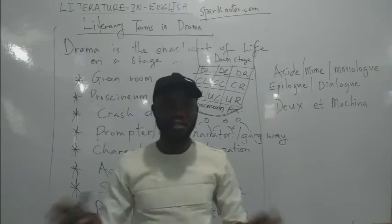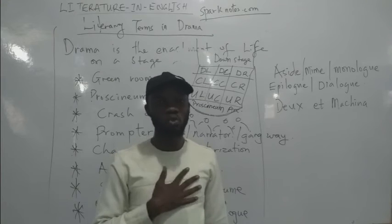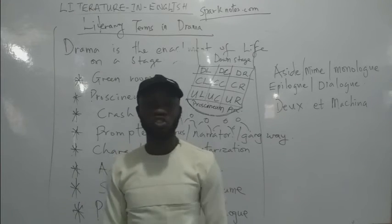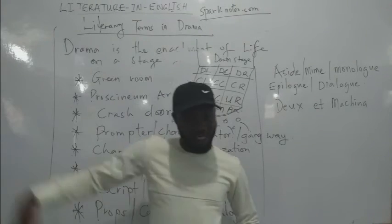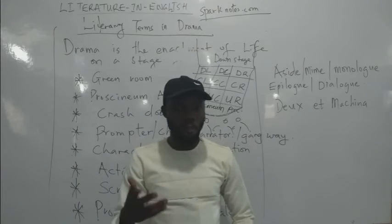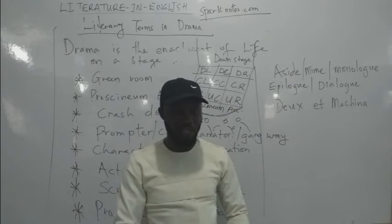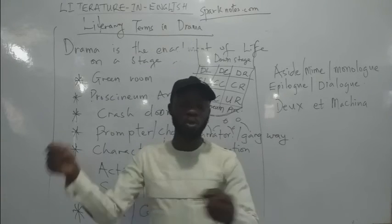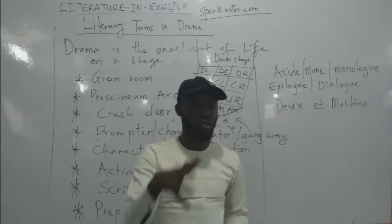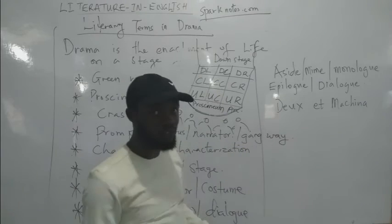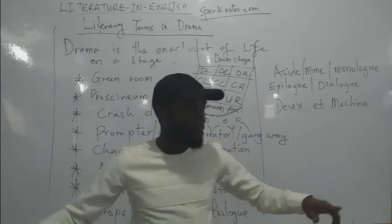Mime is when you are acting with no words — action is going on with no speaking. It is difficult for an audience to interpret, so costume is used to depict it. For instance, a woman with a pillow under her dress to show pregnancy walks in silently, followed by someone in a white apron with a stethoscope. Nobody says anything, but you understand she is pregnant, she has gone to the hospital, and the doctor delivers her baby. That is mime.